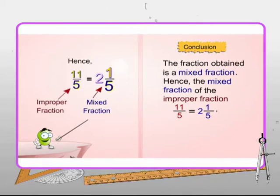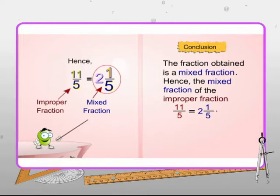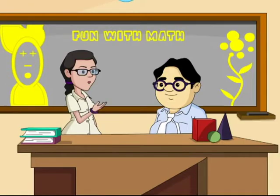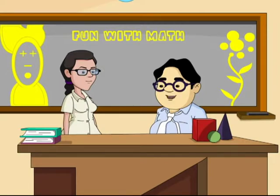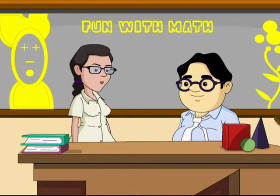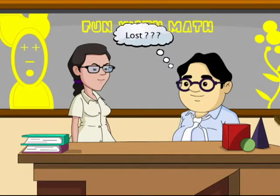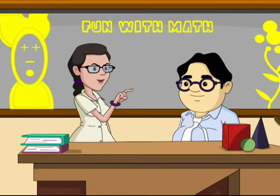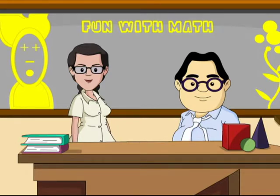So the fraction obtained is a mixed fraction. Hence the mixed fraction of the improper fraction 11 by 5 is 2 and 1 by 5. Mixed fractions get me a little mixed up, Miss Marks! You need to go back to the basics. Always keep in mind: fractions are parts of a whole. They don't show how large the whole is, but instead they show part of the whole. Forget it — let's explore the interesting facts about the evolution of fractions!